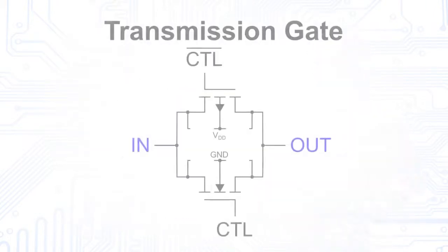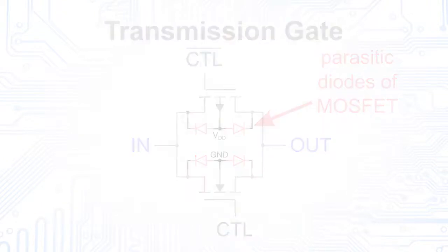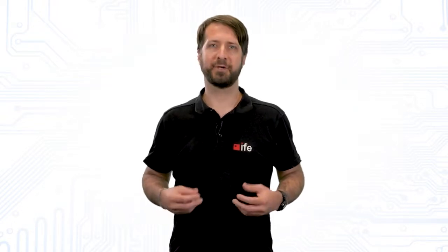Since the bulk terminal of the NMOS is permanently connected to ground, its parasitic diodes are always operated in reverse direction. The same is true for the PMOS and its bulk connection, which is permanently connected to the supply voltage. As a result, the transmission gate can be used in both directions.